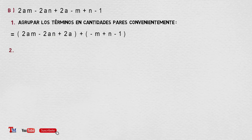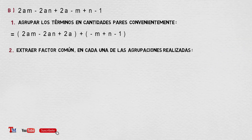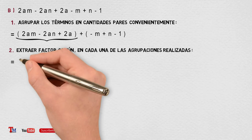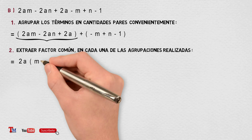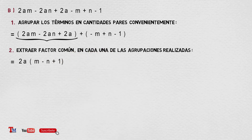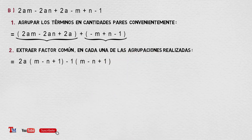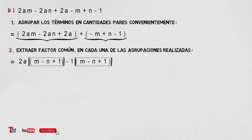Paso número 2: Extraer factor común en cada una de las agrupaciones realizadas. El factor común entre 2am, 2an y 2a sería 2a, que multiplica a m menos n más 1. En el siguiente caso, es conveniente extraer factor común menos 1 para que los signos de ambos polinomios coincidan, o sea, menos 1 que multiplica a m menos n más 1.